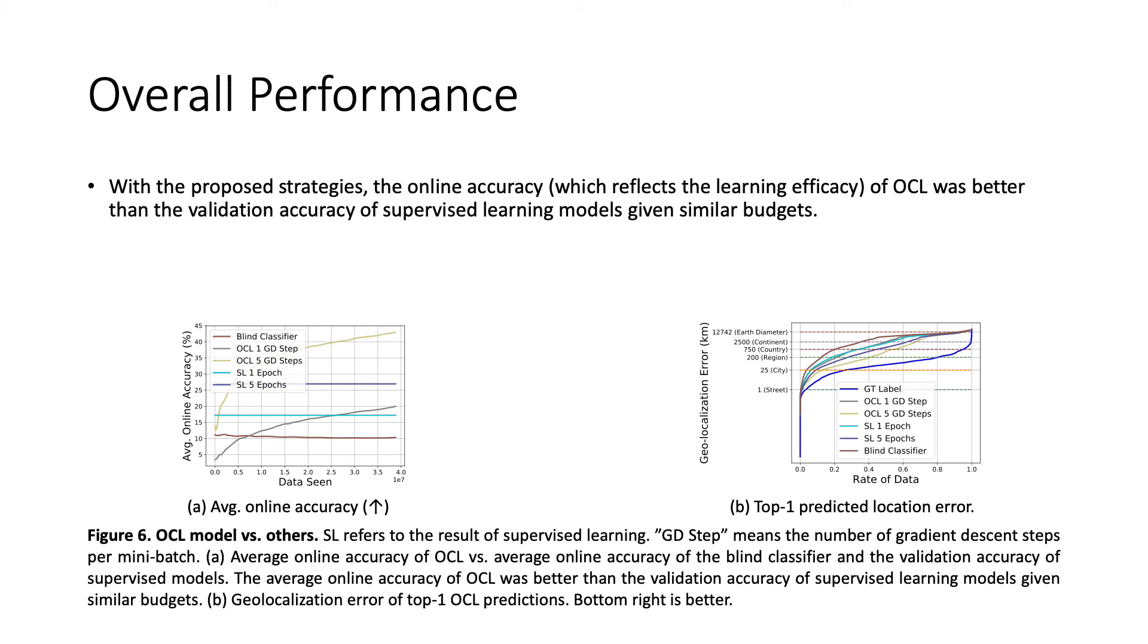With the proposed strategies, the average online accuracy of our online continual learning model was better than the validation accuracy of supervised learning models given similar budgets. This result shows the potential of online continual learning in real-world applications. It also indicates that learning efficacy and information retention are conflicting objectives in some aspect.